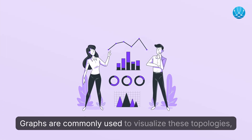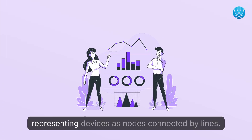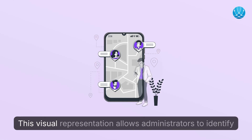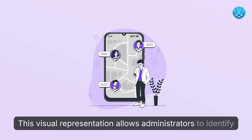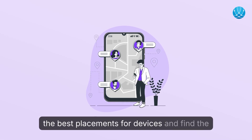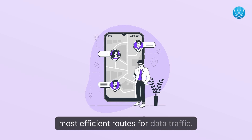Graphs are commonly used to visualize these topologies, representing devices as nodes connected by lines. This visual representation allows administrators to identify the best placements for devices and find the most efficient routes for data traffic.